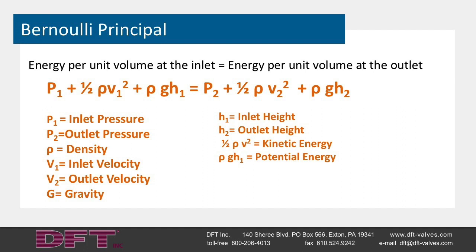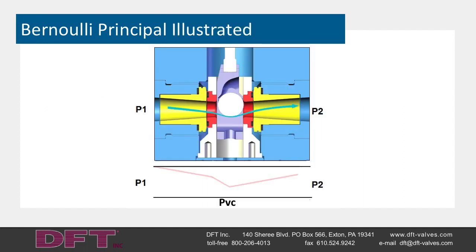The combined term ½ρV² represents kinetic energy, while the combined term ρgH represents potential energy. The best example of the Bernoulli principle is often called the Bernoulli effect, which states that the fluid pressure decreases as the fluid velocity increases. The Bernoulli principle illustrated: the illustration shows the typical change in pressure as the fluid moves through the valve — at the inlet, the pressure is P1.